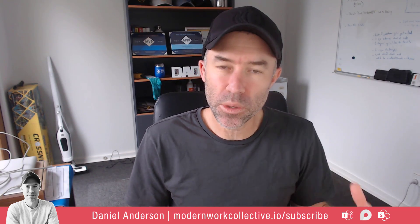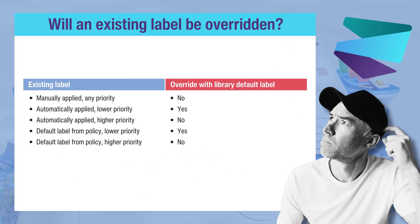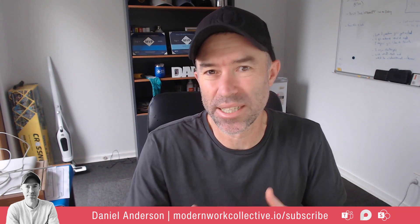There are a few nuances around when existing labels will be overridden. On screen is a table showing existing labels versus overriding with library default labels. If an existing label is manually applied at any priority, it won't be overridden by the library default. If it's automatically applied at a lower priority, it will be overridden. Automatically applied at a higher priority — no. Default label from a policy at a lower priority — yes. Default label from a policy at a higher priority — no. So if sensitivity labels are of a lower priority than the library label, they will be replaced.